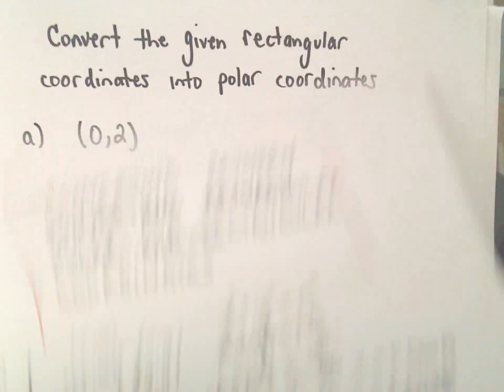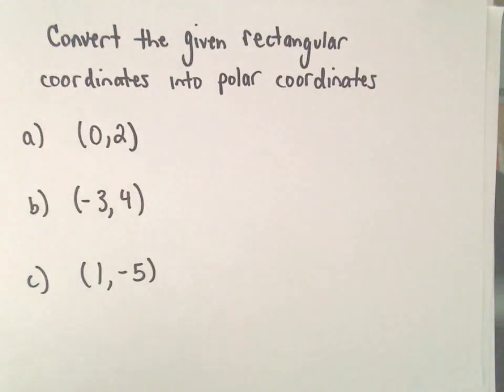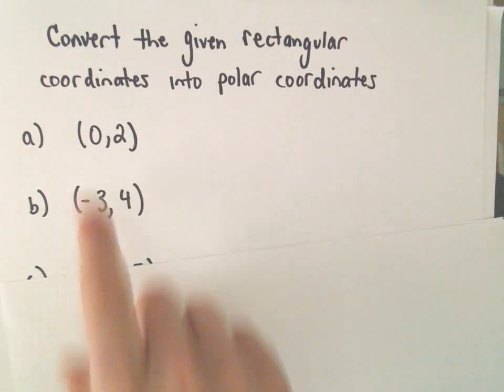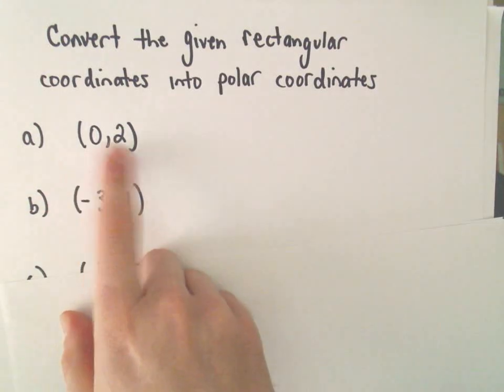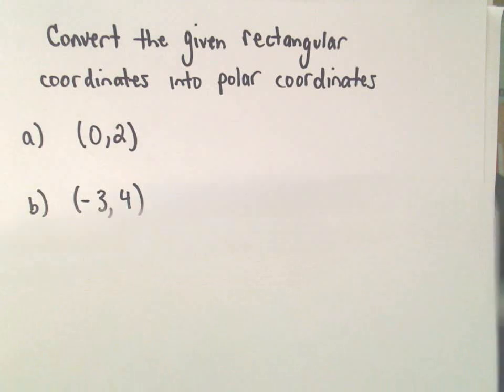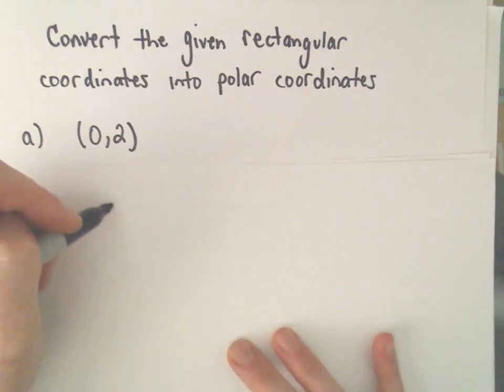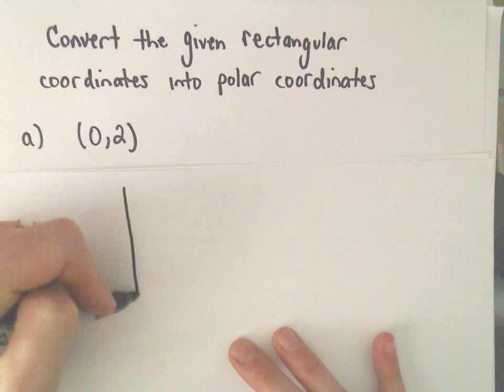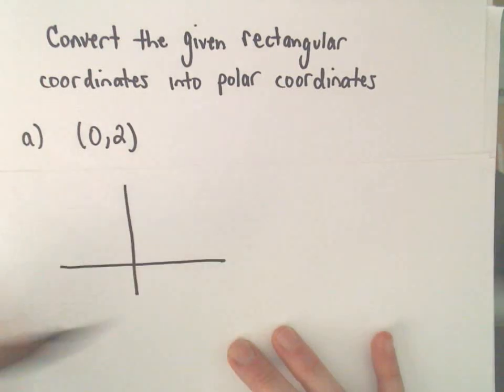All right, so I think I'm going to do a and b in this part, and then we'll do part c in another one. So suppose we want to convert the point (0, 2). We want to go from rectangular coordinates into polar coordinates. Well, we could use our formulas. I will do that on the next one. On this one, I think it's relatively straightforward.